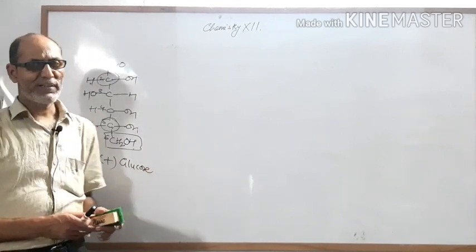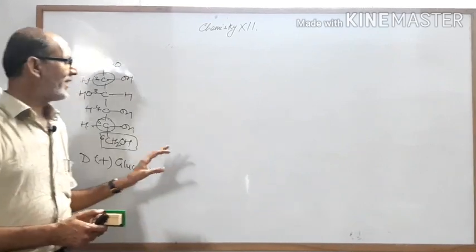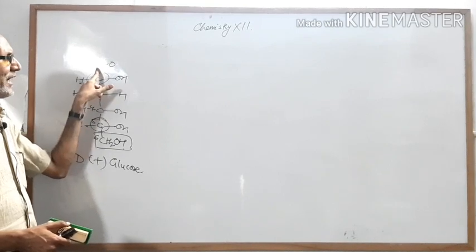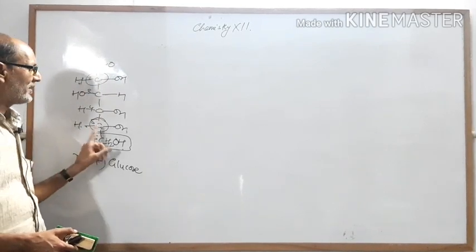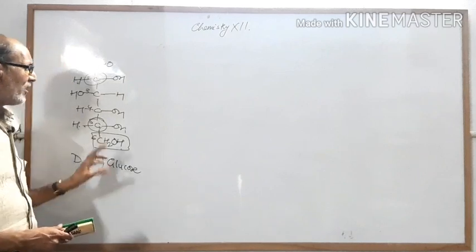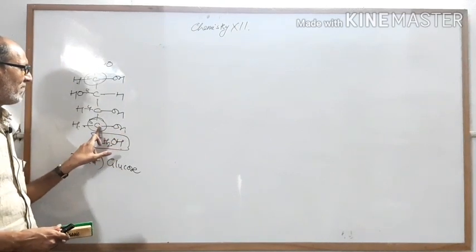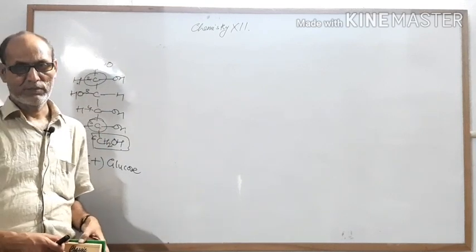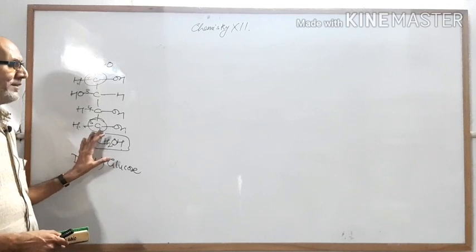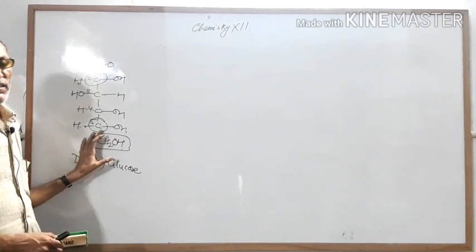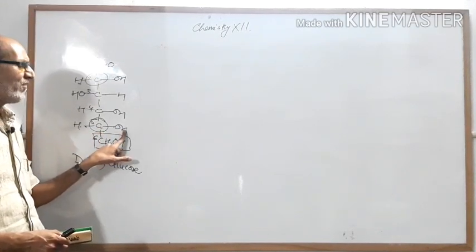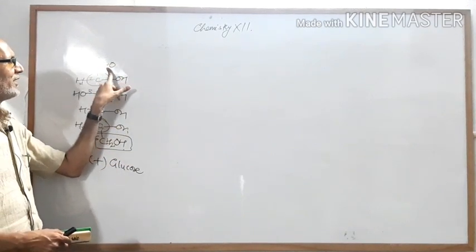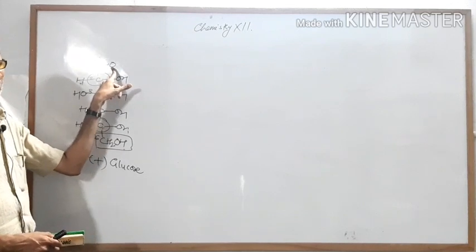Now see how you will prepare the Fischer projection formula. The aldehyde group is at carbon number one, and the oxygen of carbon number five will be connected to carbon number one. As you know from the hemiacetal concept in the aldehyde chapter, the hydrogen of carbon number five will move towards the aldehyde group and convert the aldehyde group into an alcohol.